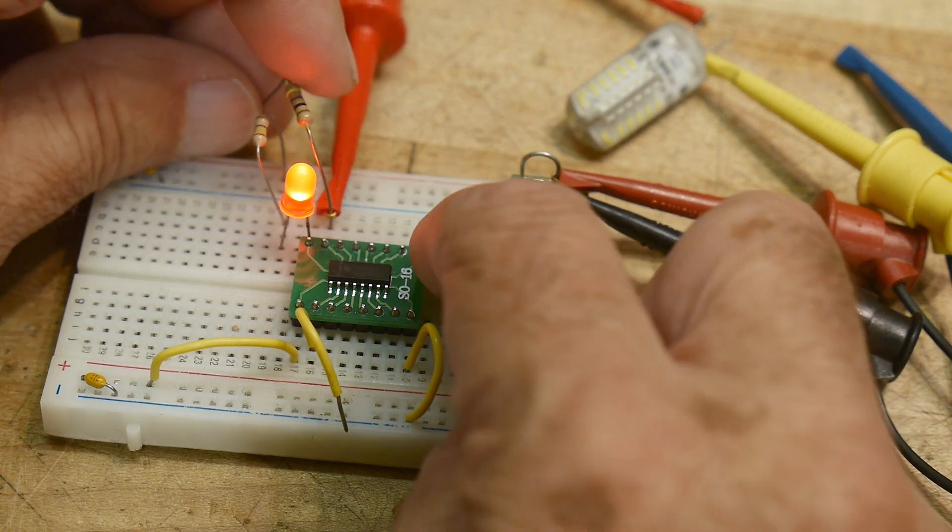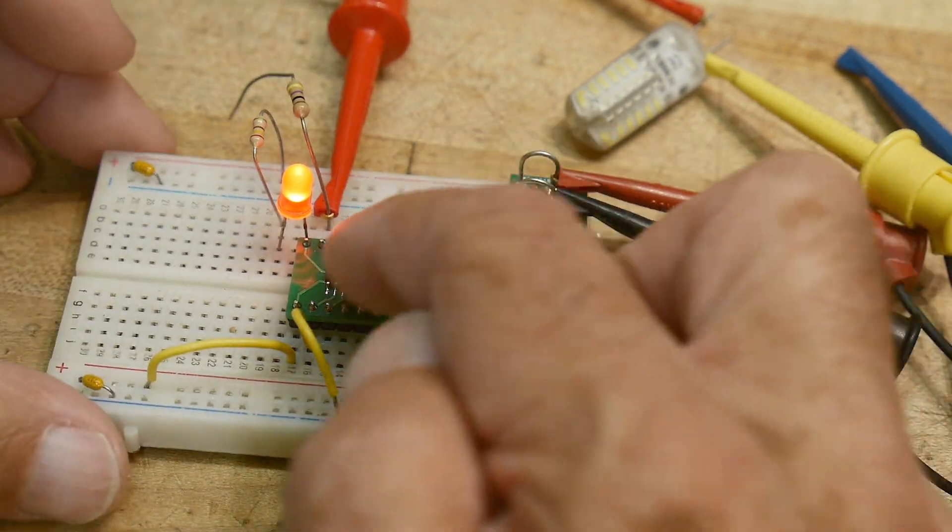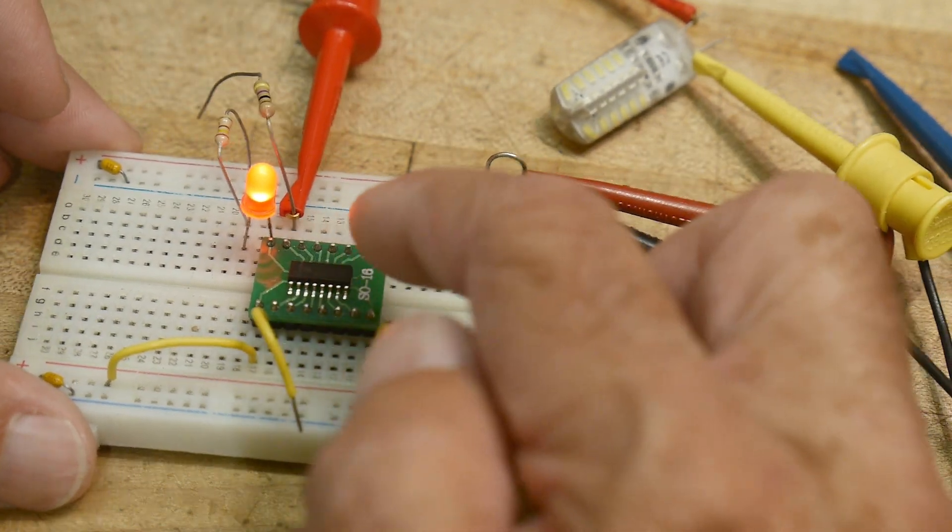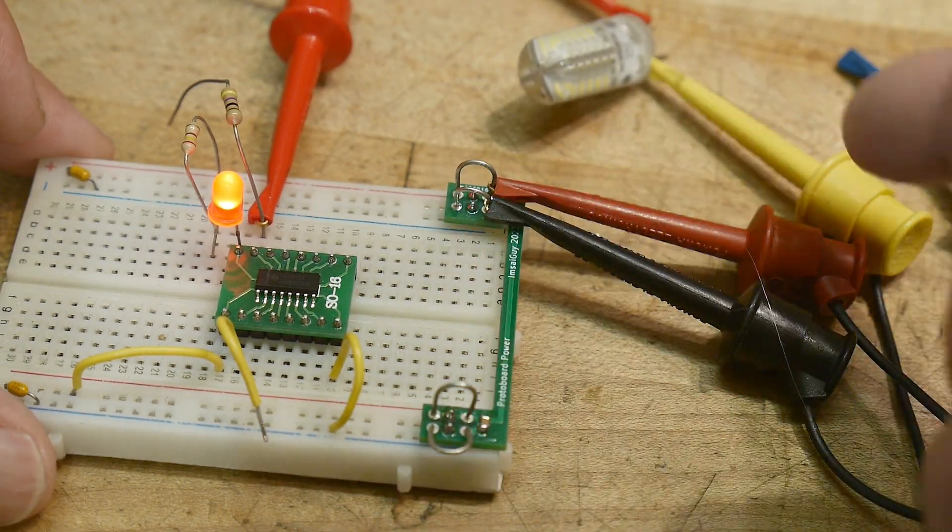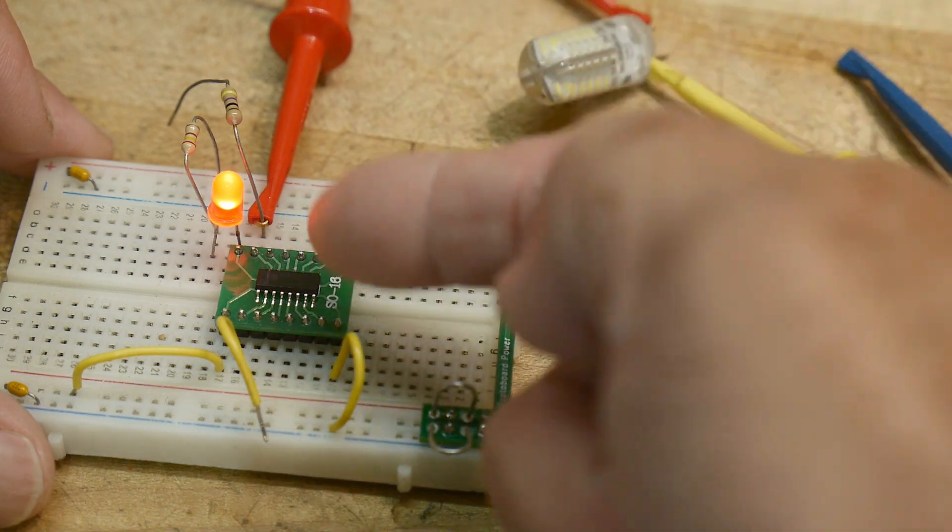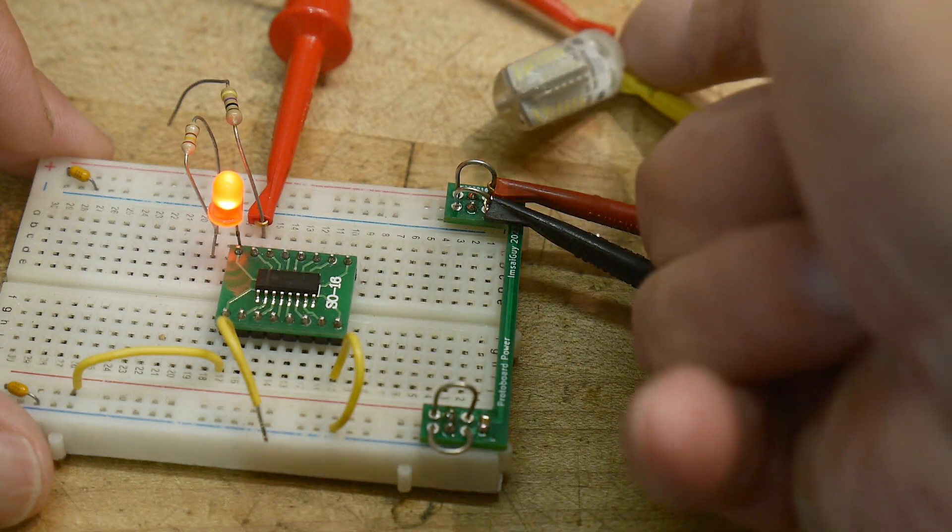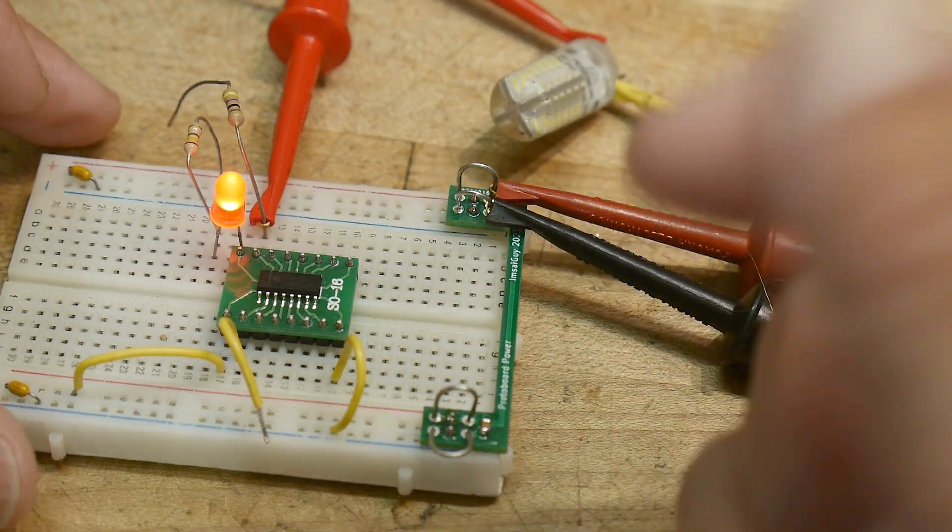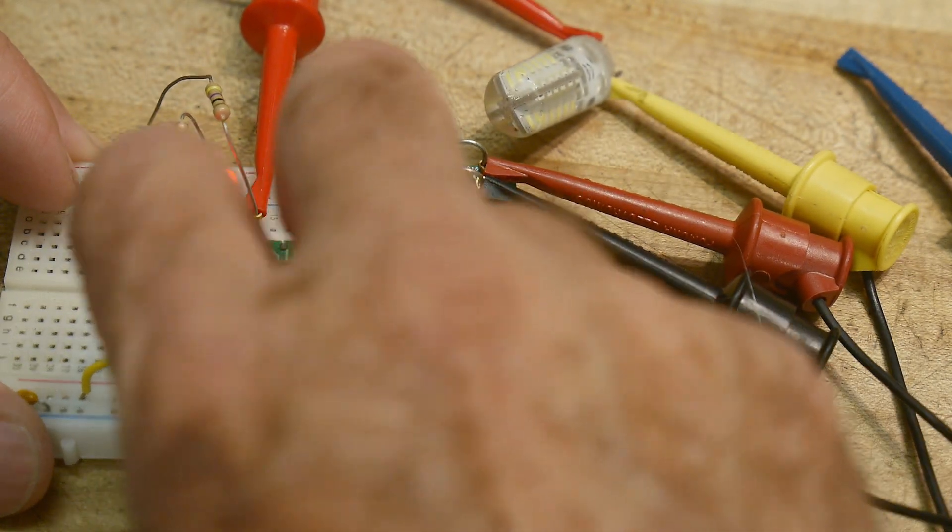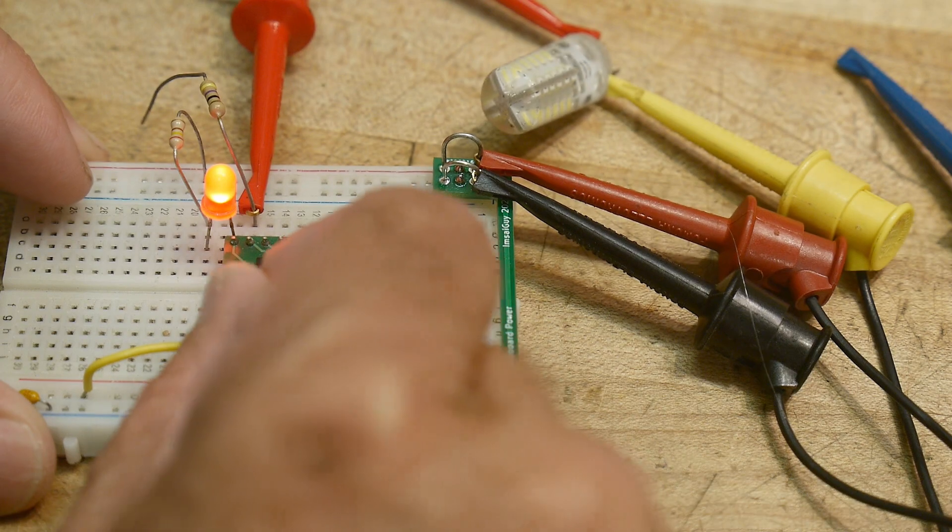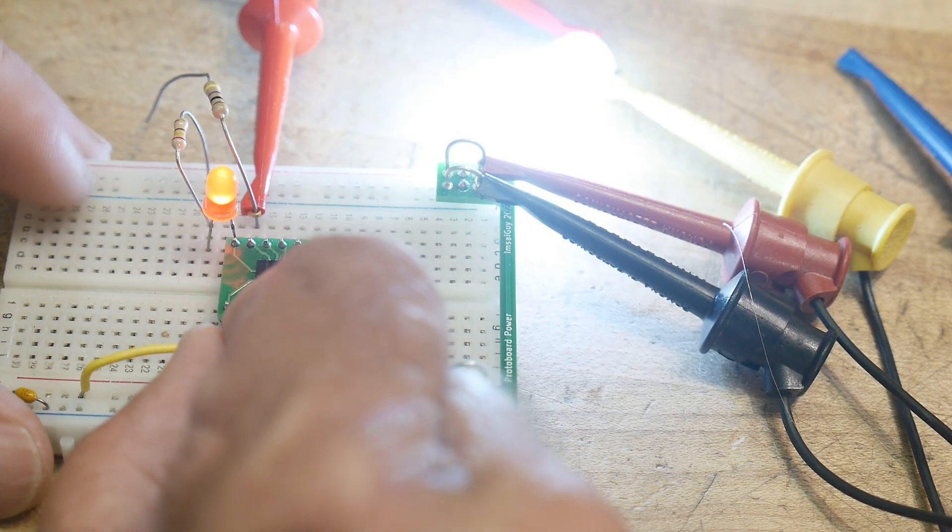All right. So the next one I have wired to this light bulb, which is a 12 volt light bulb. So this one has 12 volts coming in and then we'll use the Darlingtons to enable this 12 volt line. So let me turn that on. Oops. And there we go. Nice and bright.